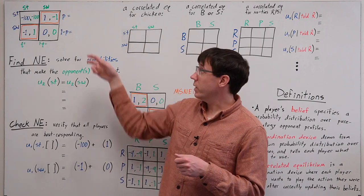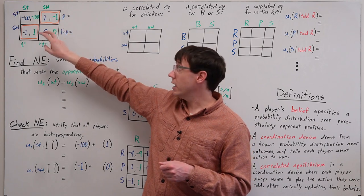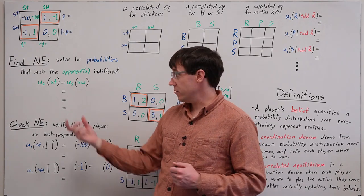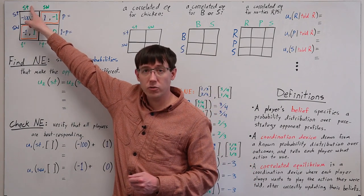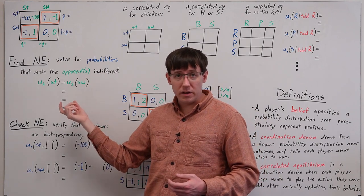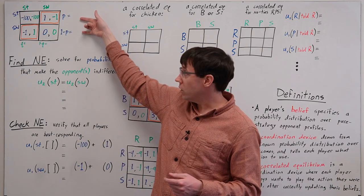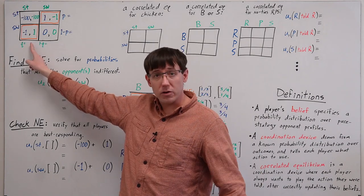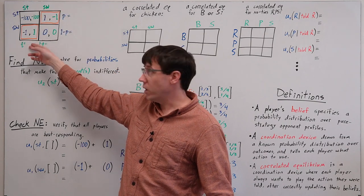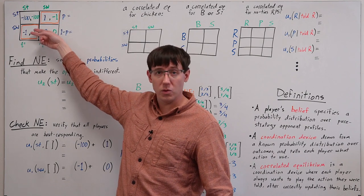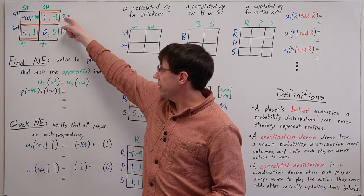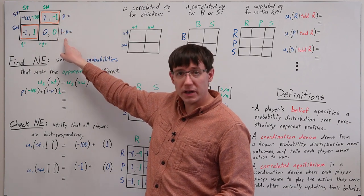In the case of chicken, we can solve for one player's probabilities that will make the other player indifferent between their two strategies, and therefore also willing to randomize. We express that indifference as the expected utility to player 2 of playing straight equals their expected utility from playing swerve. When player 2 chooses straight, there's a probability p of ending up with minus 100, and a probability 1 minus p of ending up with utility 1. Whereas if player 2 plays swerve, there's a probability p that they get minus 1, and a probability 1 minus p that they get 0.